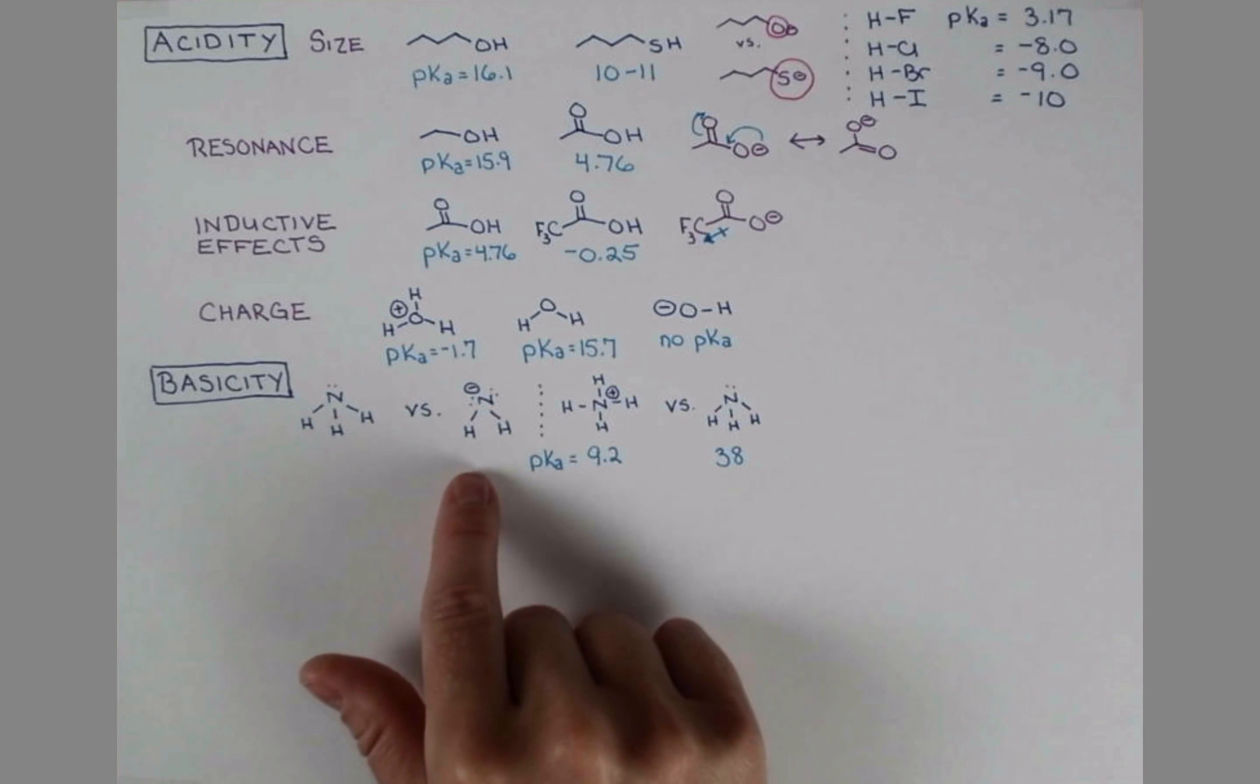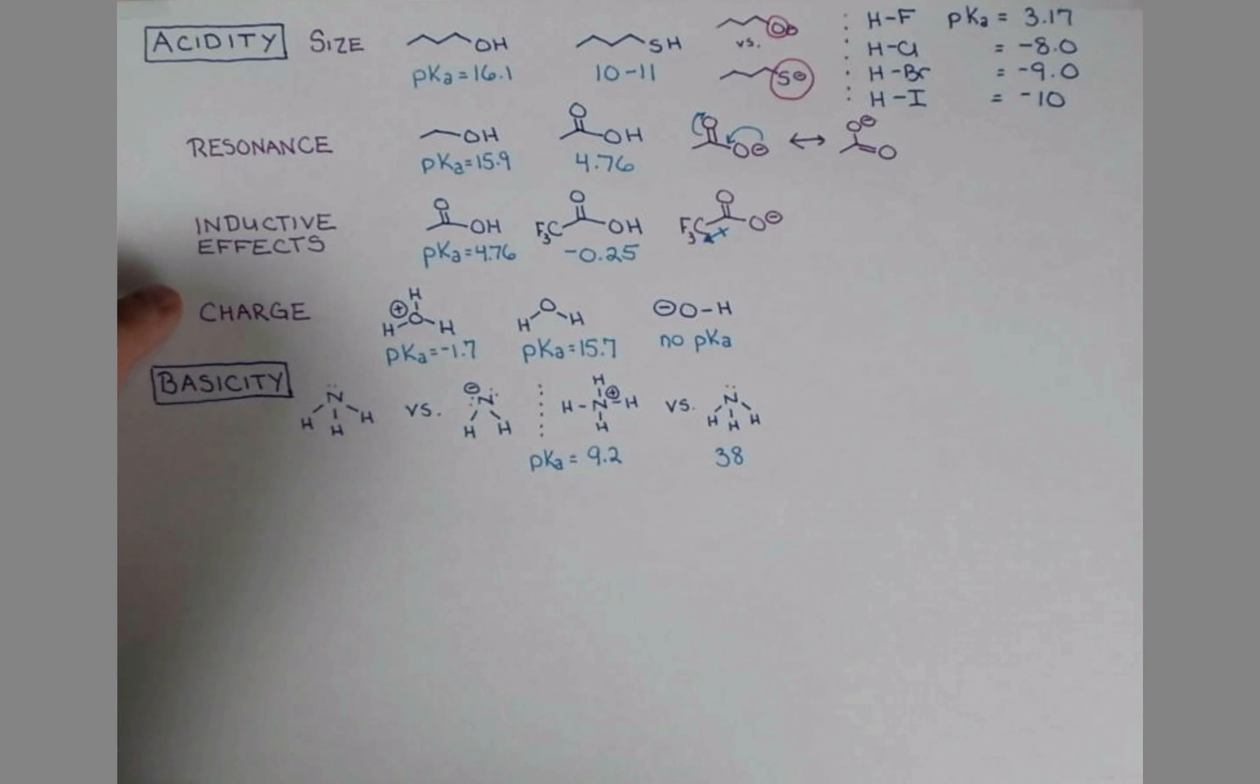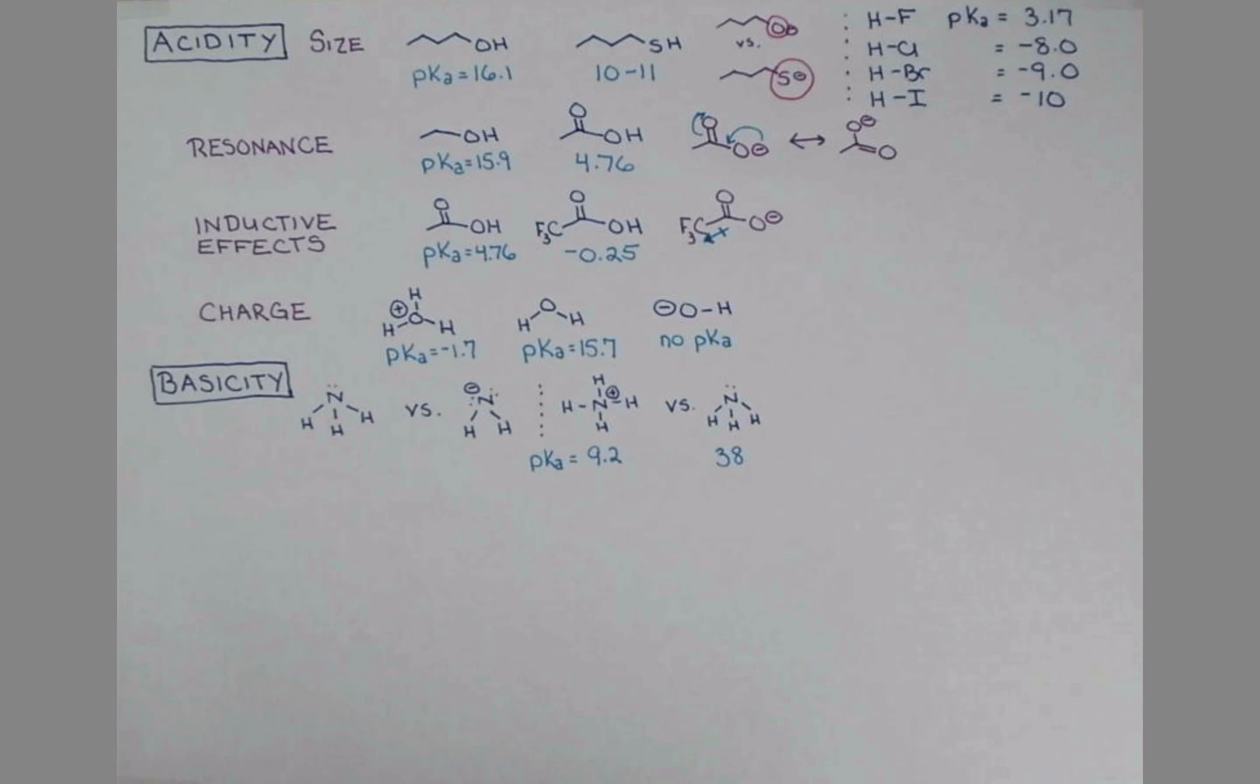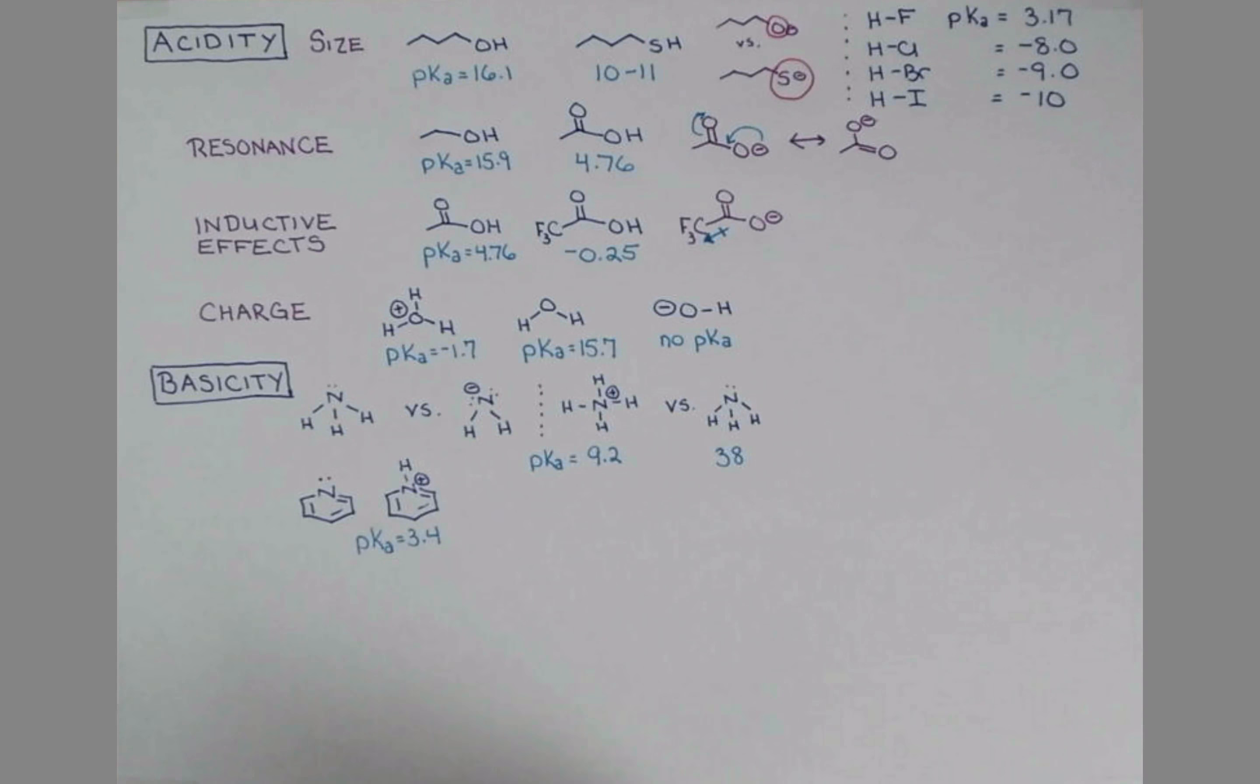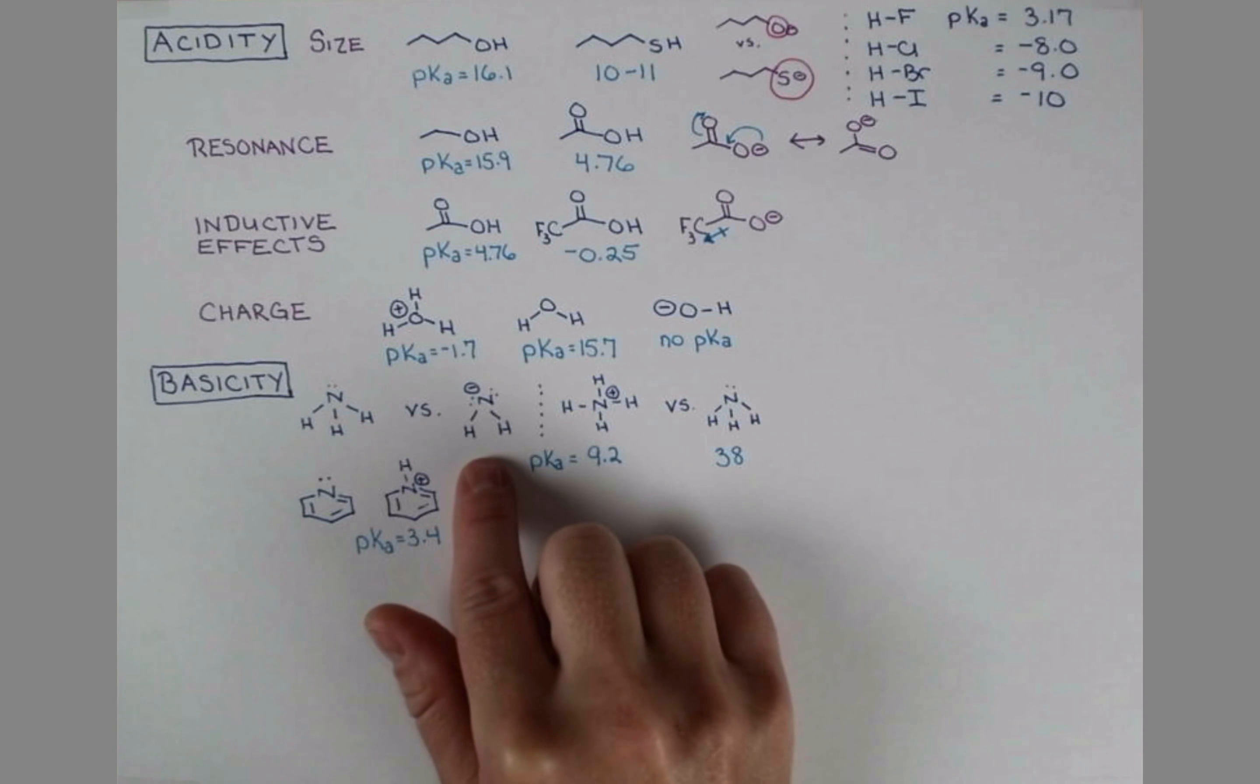Therefore this compound is much more basic than ammonia. So we can generalize a bit and say that positively charged compounds will make better acids and negatively charged compounds, analogous compounds, will make better bases. Pyridine is another base commonly used in organic reactions. It uses a lone pair on this nitrogen to accept a proton, forming this conjugate acid. The conjugate acid, pyridinium, has a pKa of 3.4. So we can see that pyridine is less basic than ammonia or sodium amide.